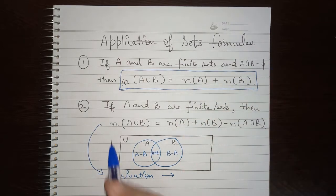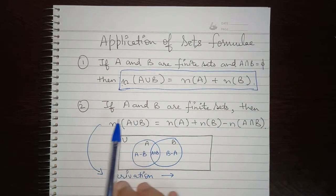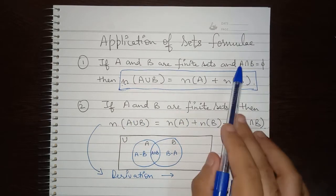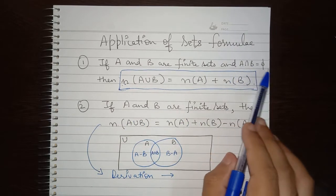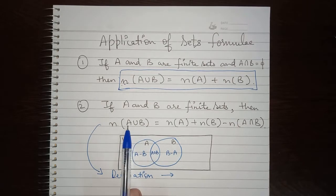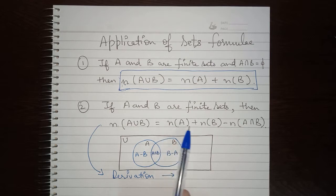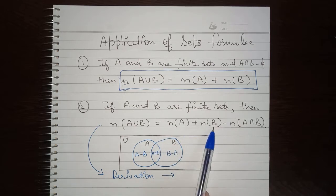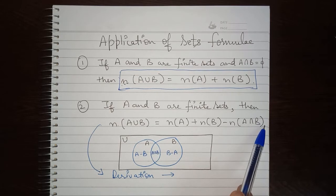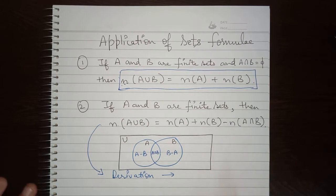The second case is interesting. When A and B are finite sets and A intersection B is not null — that is, an intersection exists — then we use the formula: the number of elements in A union B equals the number of elements in A plus the number of elements in B, minus the number of elements in A intersection B.